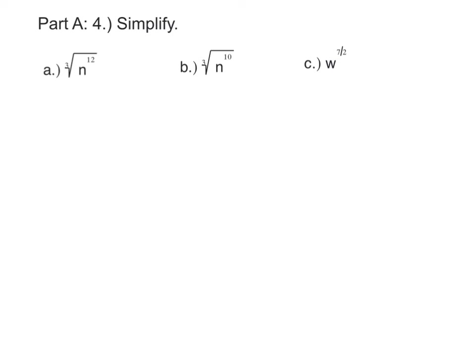If we're going to simplify some radical expressions that have some variables in them, like these — the cubed root of n to the fourth — one good trick we can use is to turn it into rational exponents. Remember, when we have a cubed root and an n to the twelfth, the power is the numerator and the root is the denominator. Looking at it as a rational exponent, we can divide twelve by three and get four.